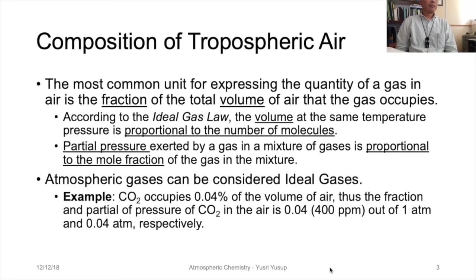Atmospheric gases can be considered as ideal gases. We can make that assumption. For example, carbon dioxide CO2 occupies 0.04 percent of the volume of air, or about 400 ppm. This means the partial pressure of CO2 in the air is about 0.04 fraction or 400 ppm out of 1 atm, and 0.04 atm respectively.